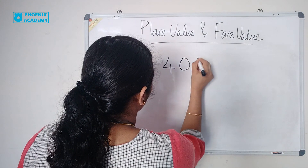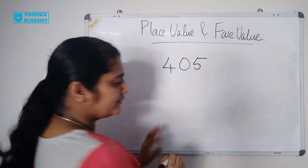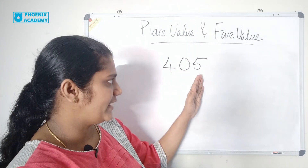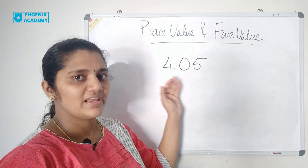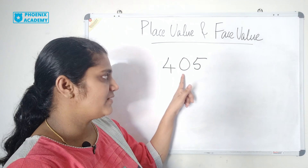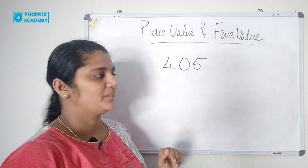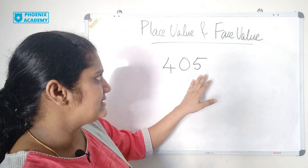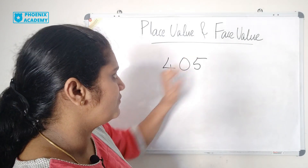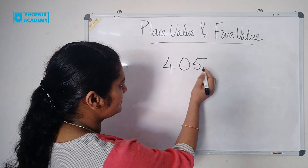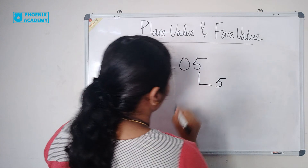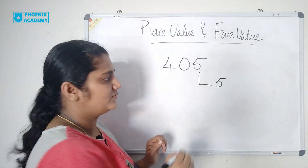405. 405 is 5 ones, 0 tens and 4 hundreds. Do you remember? Place value of 0 is always 0. So let us see the place value of the digits. 5 is in ones position, so place value of 5 is 5. What is the place value of 0? It is 0.